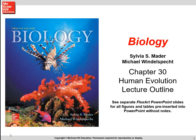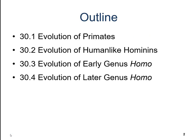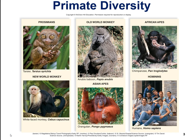This is our lecture on human evolution, Chapter 30. Here's an outline: we'll talk about the evolution of primates in general, the evolution of human-like hominins, the evolution of the early genus Homo, and then the later genus Homo, which gets us to present-day Homo sapiens.